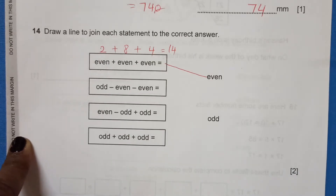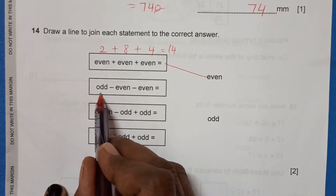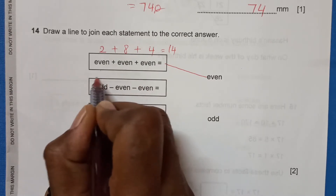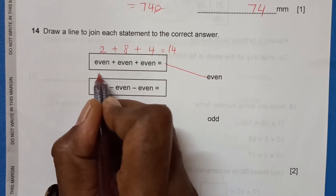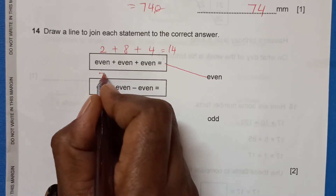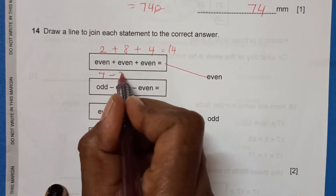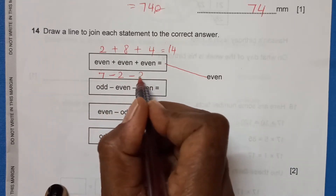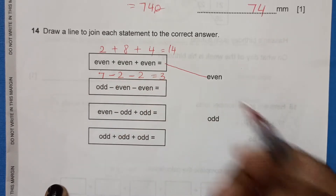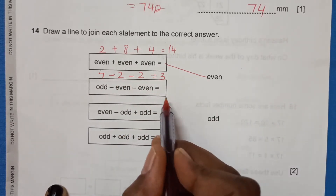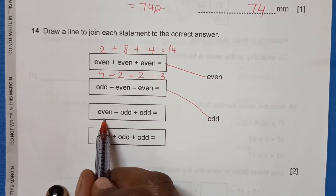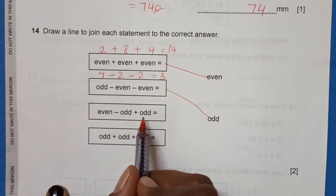Next statement: odd minus even minus even. Let's take 7 minus 2 minus 2. That gives 7 minus 2 equals 5, then 5 minus 2 equals 3. Since 3 is an odd number, we match this statement with odd.